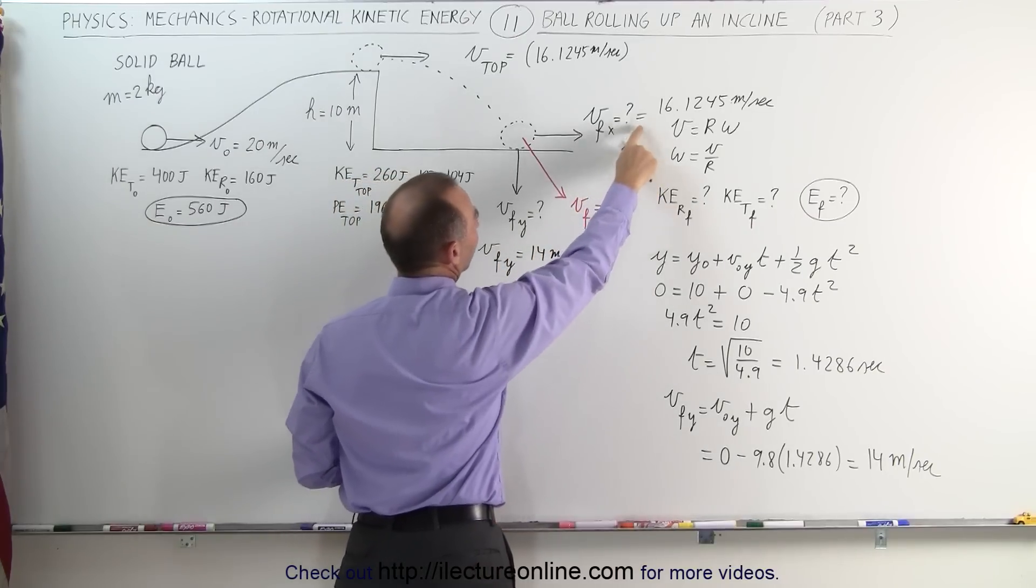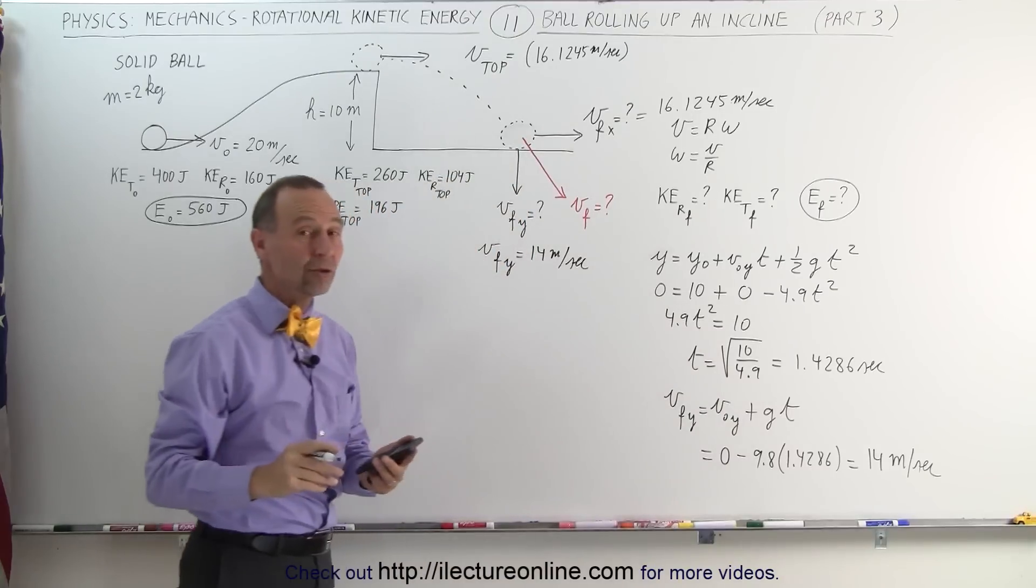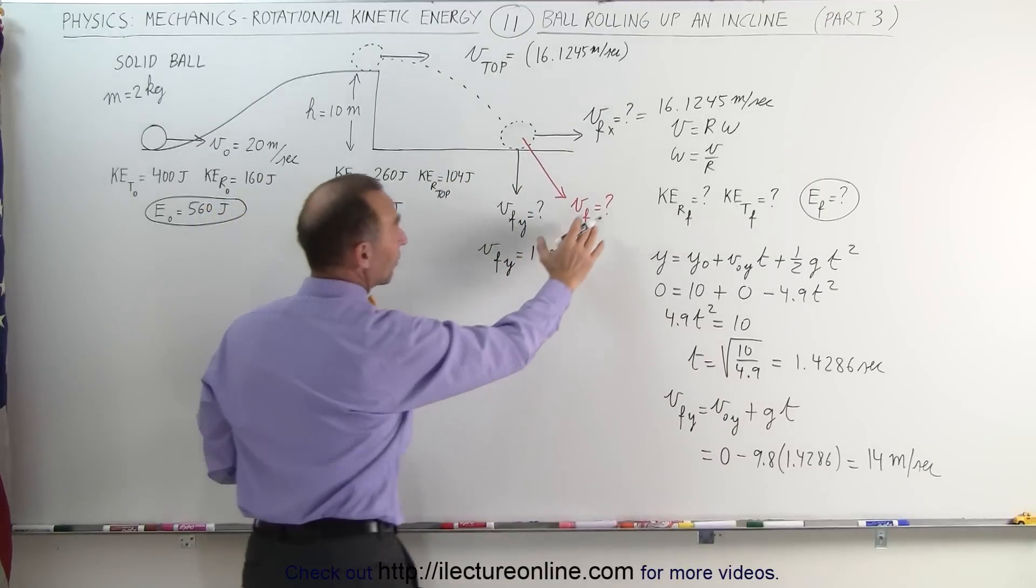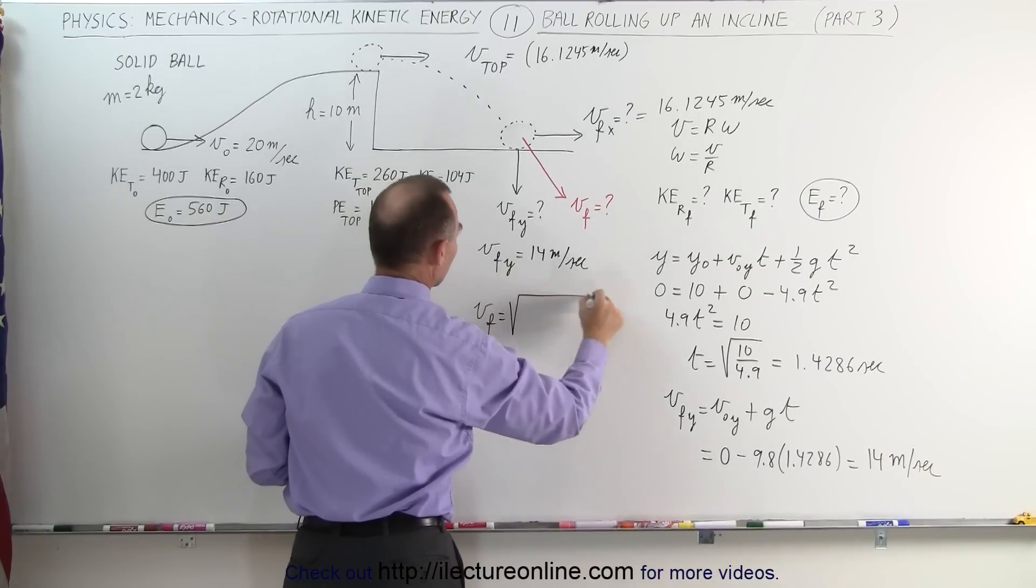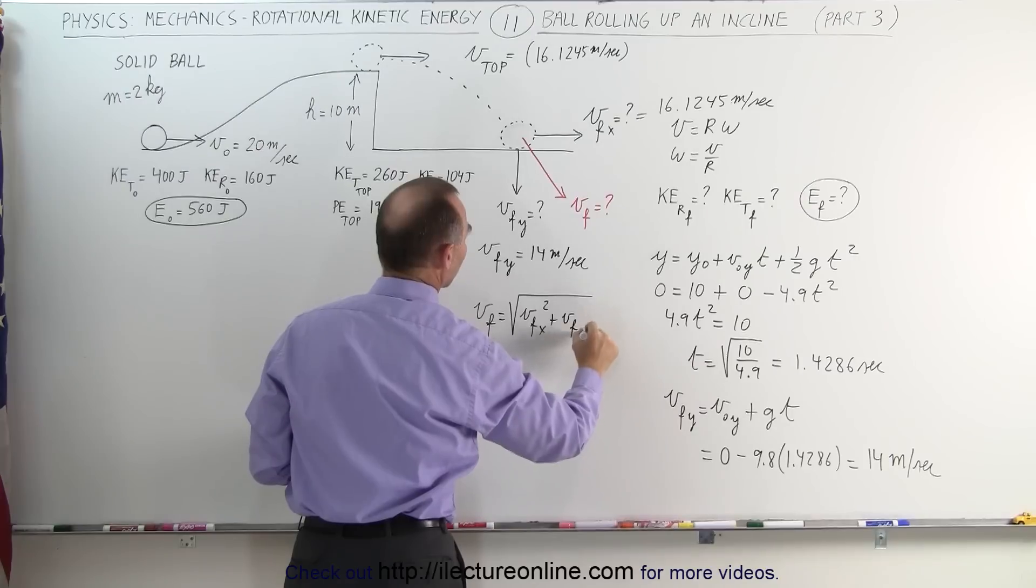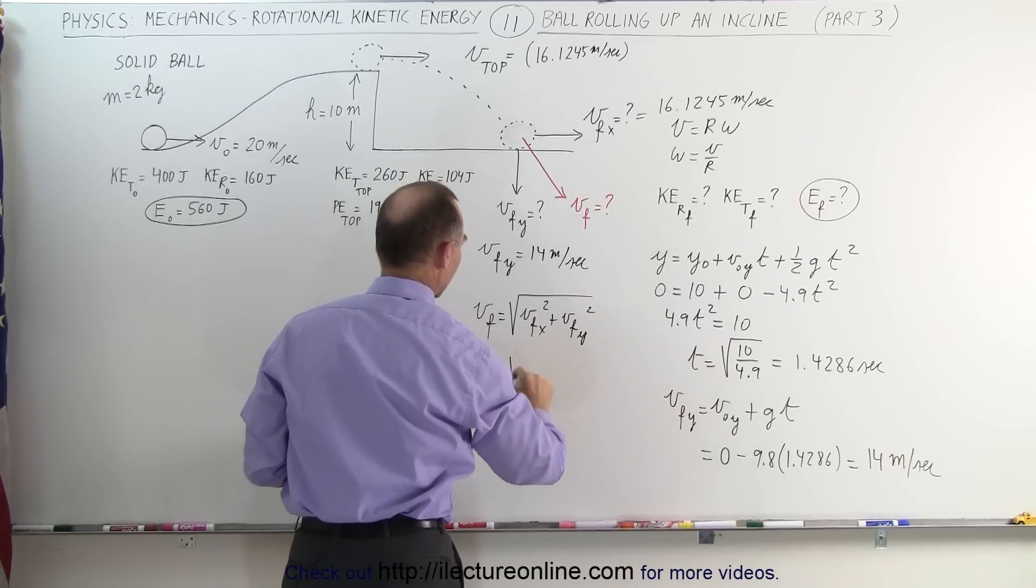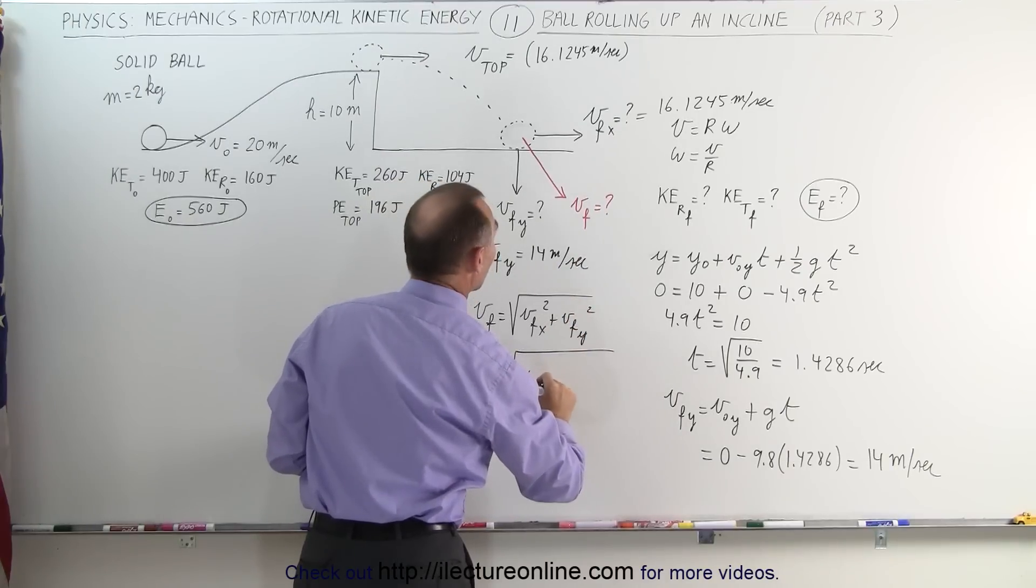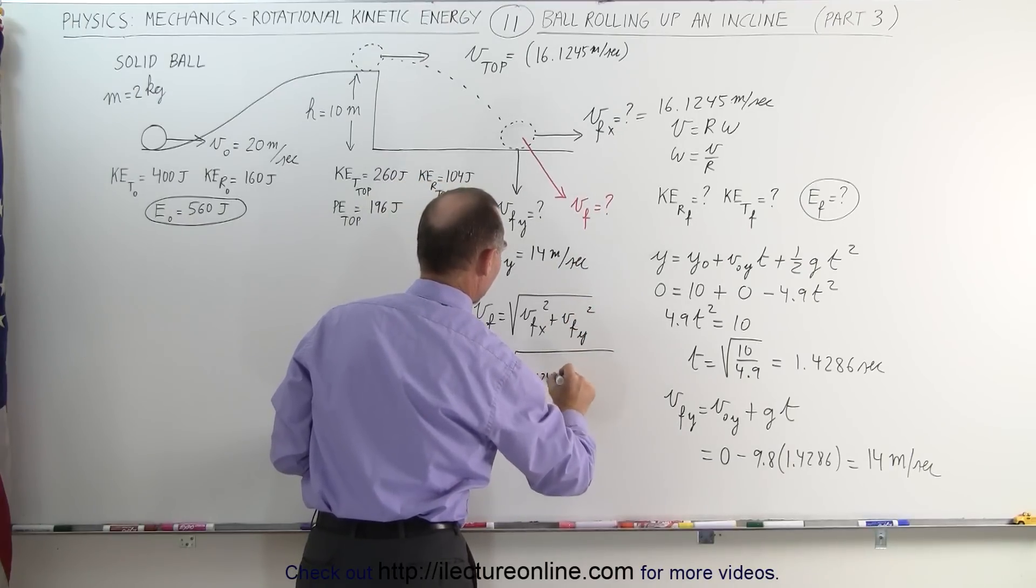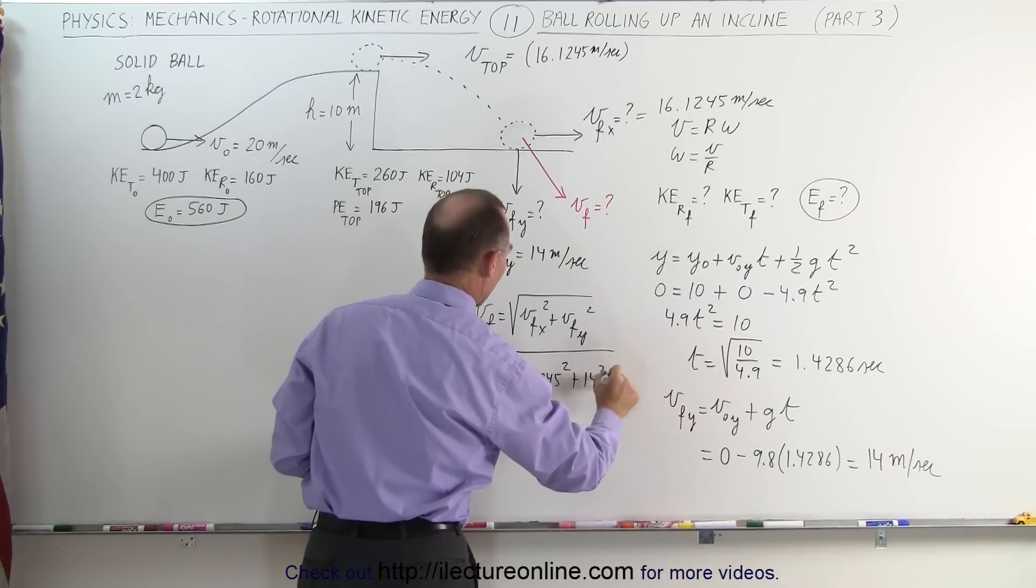Now, using Pythagorean theorem, we can find v final. V final is going to be equal to the square root of v final in the x-direction squared plus v final in the y-direction squared, which is equal to the square root of 16.1245 squared plus 14 squared.